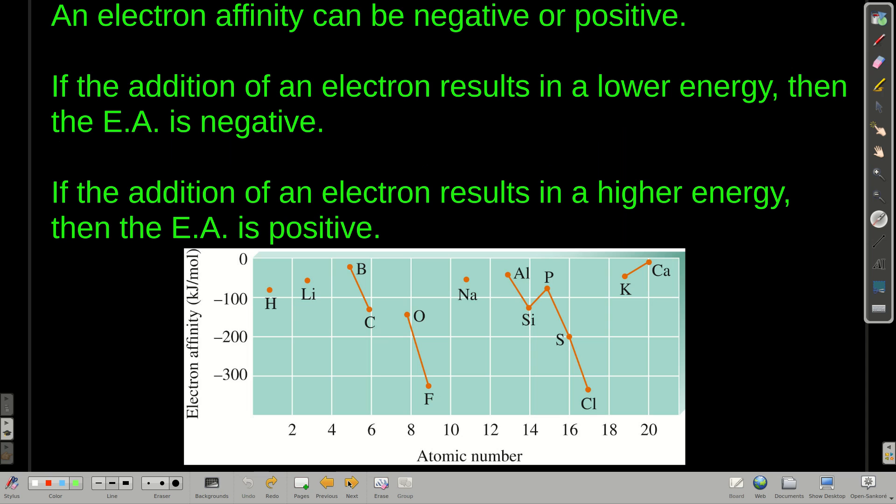Electron affinity can be either negative or positive. That's as opposed to ionization energies. Ionization energies are always positive. You'll always have to put energy in to pull an electron away from an atom. But electron affinity can be negative or positive. If when you add that electron it results in a lower energy, then it's negative.